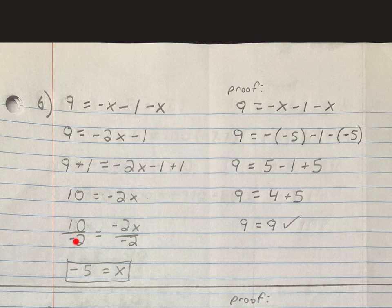Okay, and 10 divided by negative 2 is negative 5. Sorry, killing mosquitoes. And negative 2x divided by negative 2 is x. Negative 5 equals x.